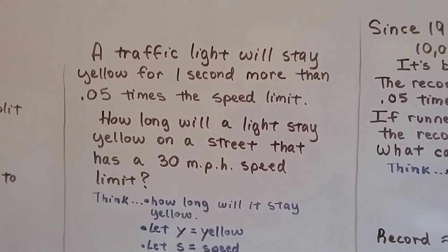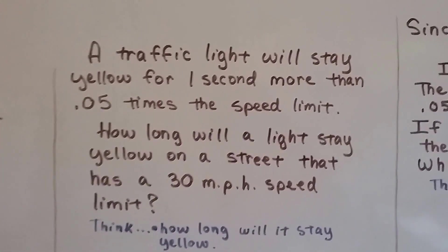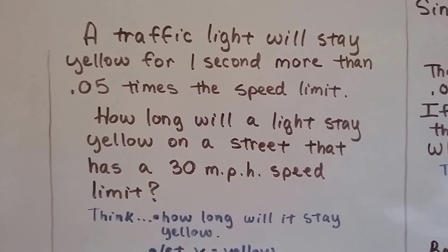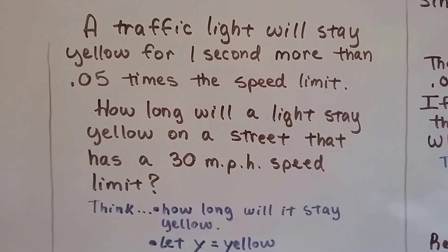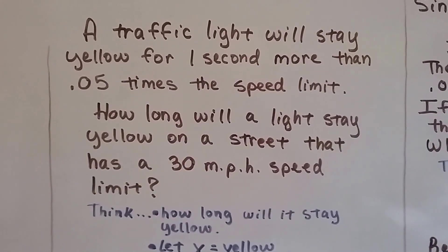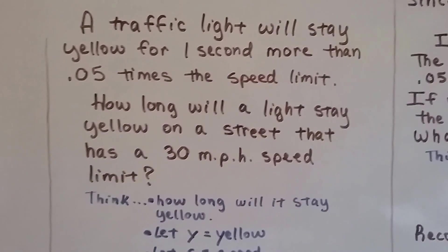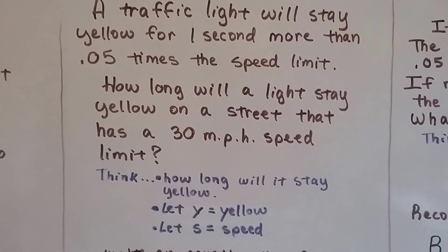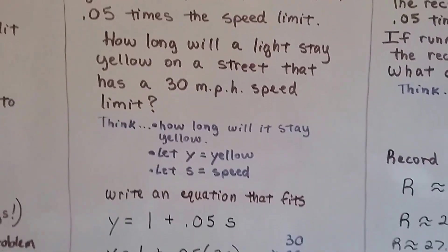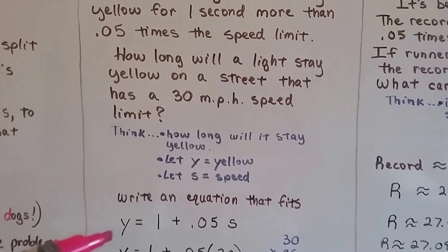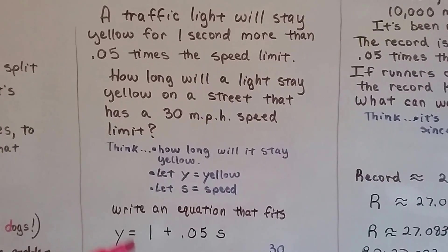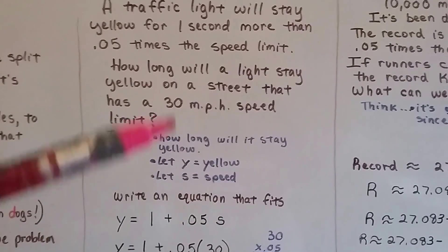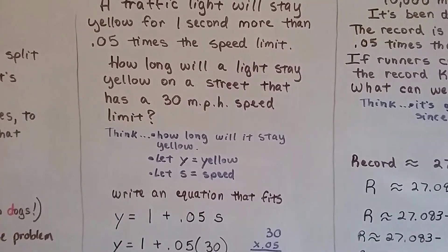We have a traffic light that stays yellow for one second more than 5 one-hundredths times the speed limit. How long will a light stay yellow on a street that has a 30 mile an hour speed limit? So, we think, what it wants is, how long will it stay yellow? We're going to let y equal the yellow and s equal the speed. We're going to write an equation that fits this. So, the yellow is going to equal 1 more, 1 plus .05 times speed s. See that?